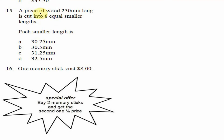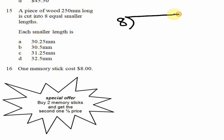Question 15: a piece of wood 250 millimeters long is cut into 8 equal smaller lengths. What is each length? Similar to question 14, we use division. We need to find how many times 8 goes into 250.